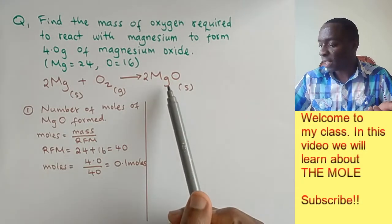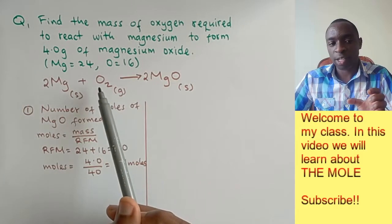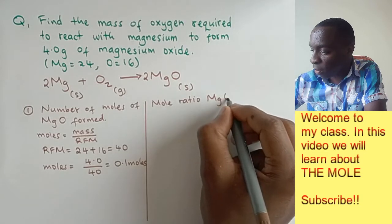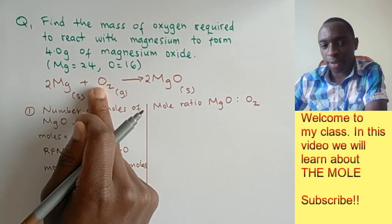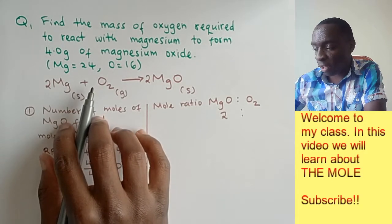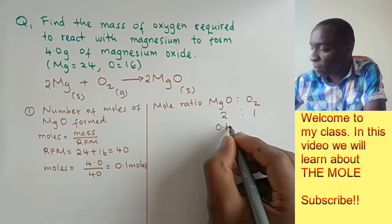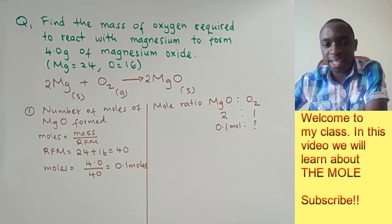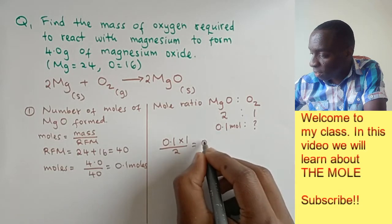Now that we have the number of moles of magnesium oxide, and these numbers in the equation are the mole ratios, we can use the mole ratios to get the number of moles of oxygen. The mole ratio between magnesium oxide and oxygen is given by the numbers before each in the chemical equation. The number before magnesium oxide is 2 and the number before oxygen is 1. Since the number of moles of magnesium oxide is 0.1 moles, we calculate the moles of oxygen by cross multiplication: 0.1 multiplied by 1 divided by 2, which gives us 0.05 moles of oxygen.